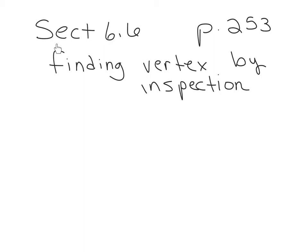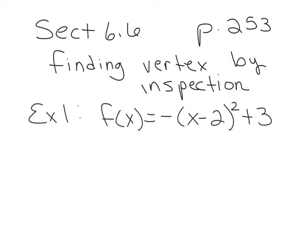We're working in intermediate algebra, section 6.6, starting on page 253 of your book. We're going to be finding the vertex of a quadratic function, or the vertex of a parabola, by inspection. Example one says: find the vertex of the quadratic function f(x) equals negative x minus 2 squared plus 3.